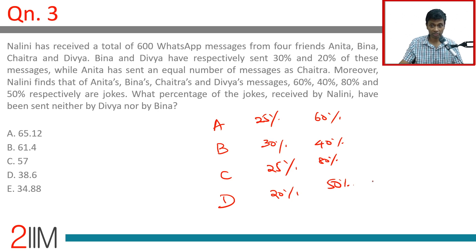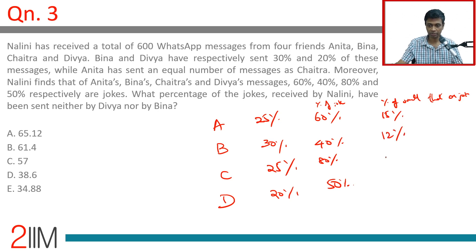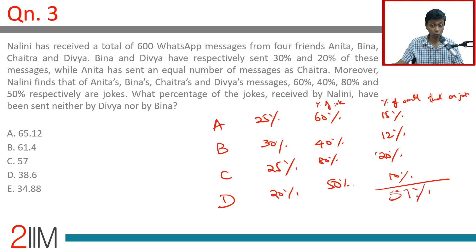The question is: what percentage of the jokes received by Nalini have not been sent by Divya or Beena? First, let's find the percentage of overall messages that are jokes: 60% of 25% is 15%, 40% of 30% is 12%, 80% of 25% is 20%, and 50% of 20% is 10%. That totals 57% of all messages are jokes.